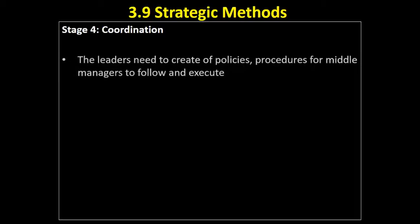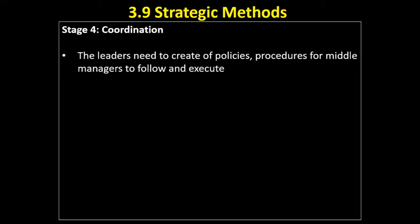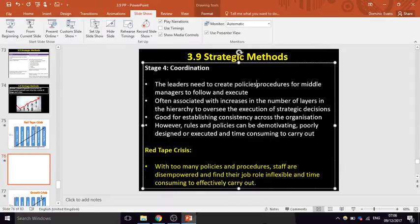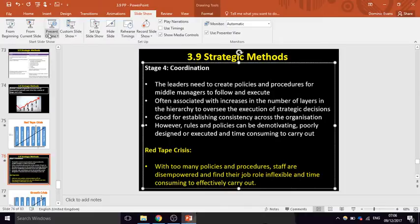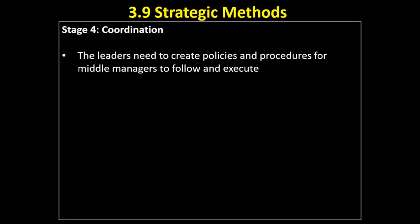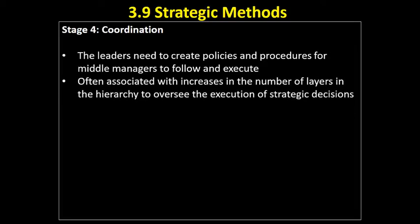So what happens? We reach the coordination phase of growth, which ends with a red tape crisis. The leaders realize things are chaotic from the previous stage, so they need to create policies and procedures which middle managers are able to follow and execute — really clear guidelines for how to operate. This is often associated with an increase in the number of layers in the hierarchy.